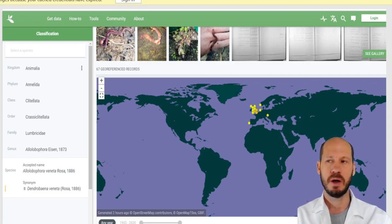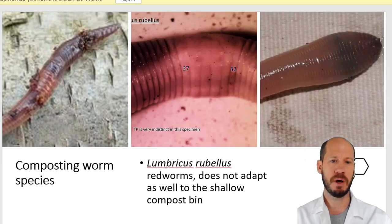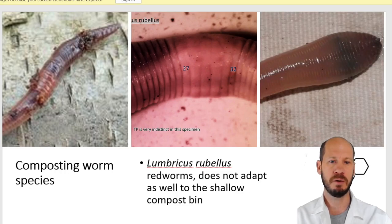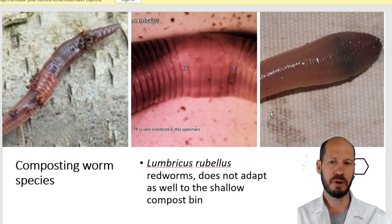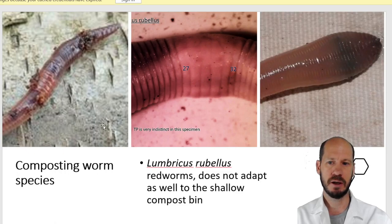Another species occasionally reported in compost, though not very successfully, is Lumbricus rubellus. It tends to dig deep into soil, so it does not do well in shallow compost bins but performs better in deep ones. The main telltale feature of Lumbricus rubellus is a slightly flattened tail — if you have worms with a flattish tail, this is characteristic of Lumbricus species.